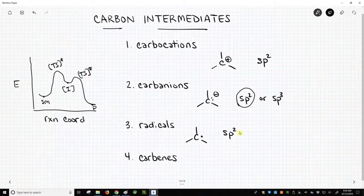The radical, that single electron, occupies a p orbital, unhybridized p orbital on carbon.